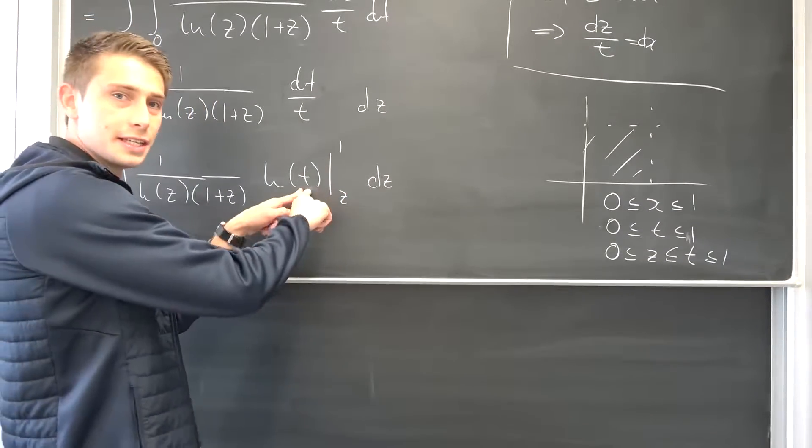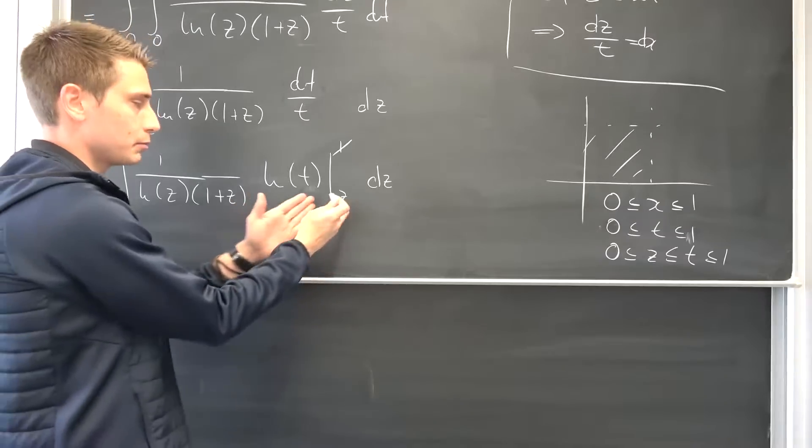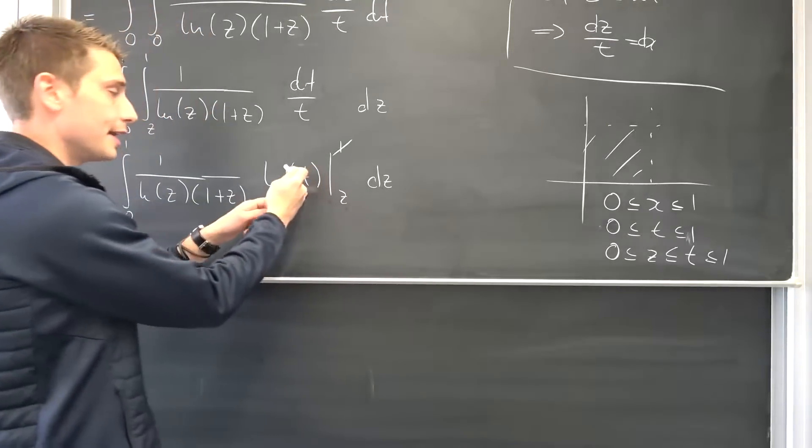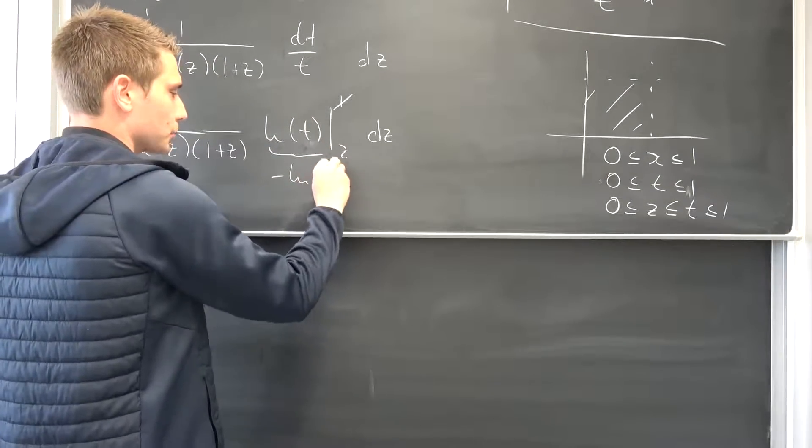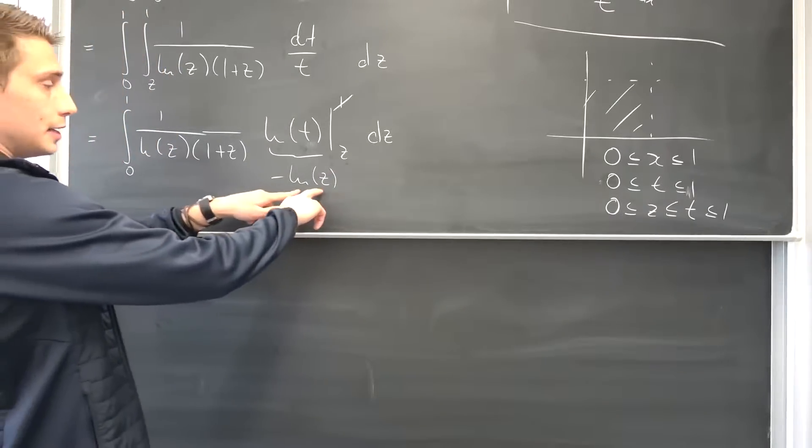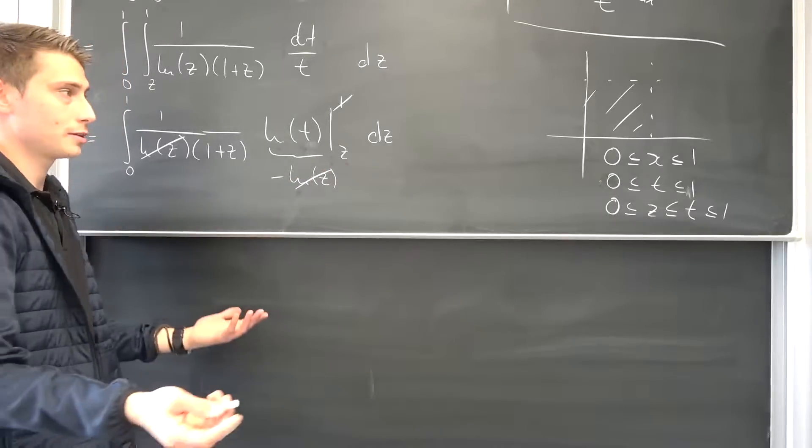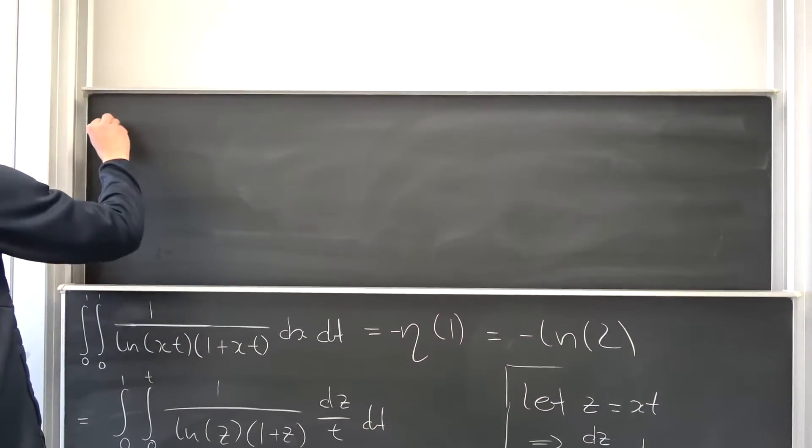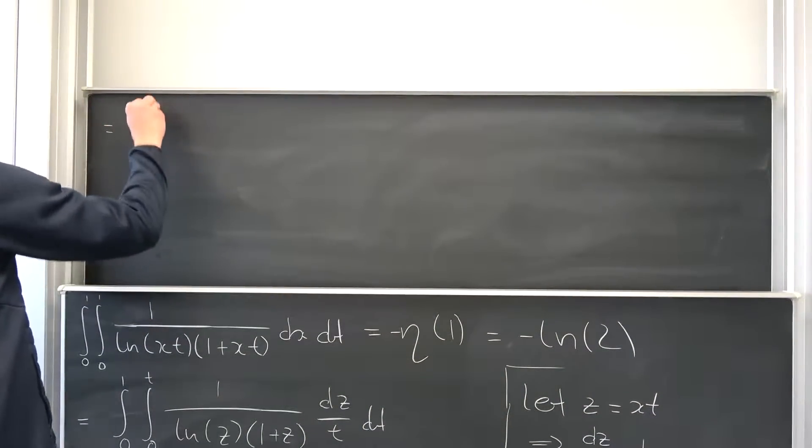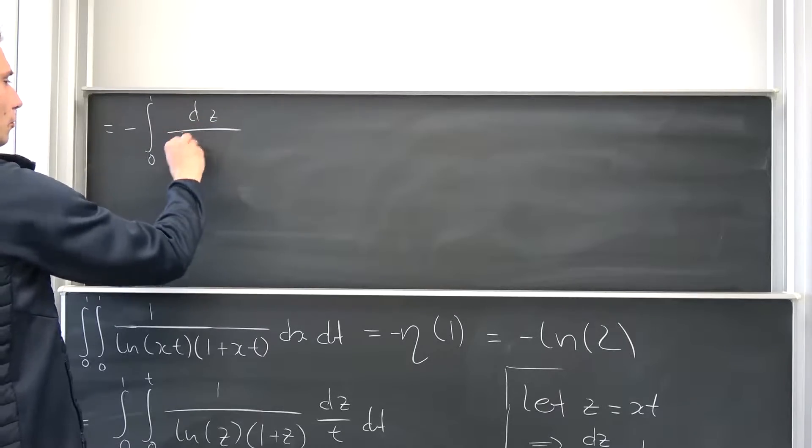If we plug 1 into here, this is going to give us 0, the natural log of 1 is going to vanish. Then we have the second part of integration, negative sign, negative natural log of z. So this thing right here is the natural log of z but with a negative sign. Natural log of z and 1 over natural log of z is going to cancel out. So that's cool, we got rid of that actually. Meaning our integral at the moment is nothing but integral from 0 to 1, we had this negative sign right here, dz over 1 plus z.